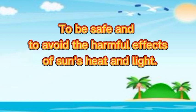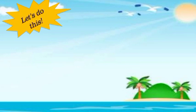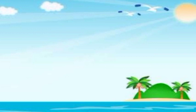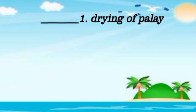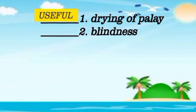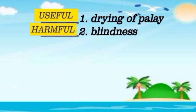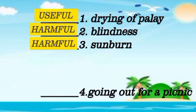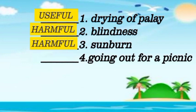Did you understand class? Okay, it's activity time. Let's do this. Identify if the following are useful or harmful effects of sun's heat and light. Number 1: Drying of palay. Terrific kids! Yes, it's useful. Number 2: Blindness. You are amazing! Correct, it's harmful! Number 3: Sunburn. Scientastic! The answer is harmful. How about number 4: Going out for a picnic. Amazing! It is useful!